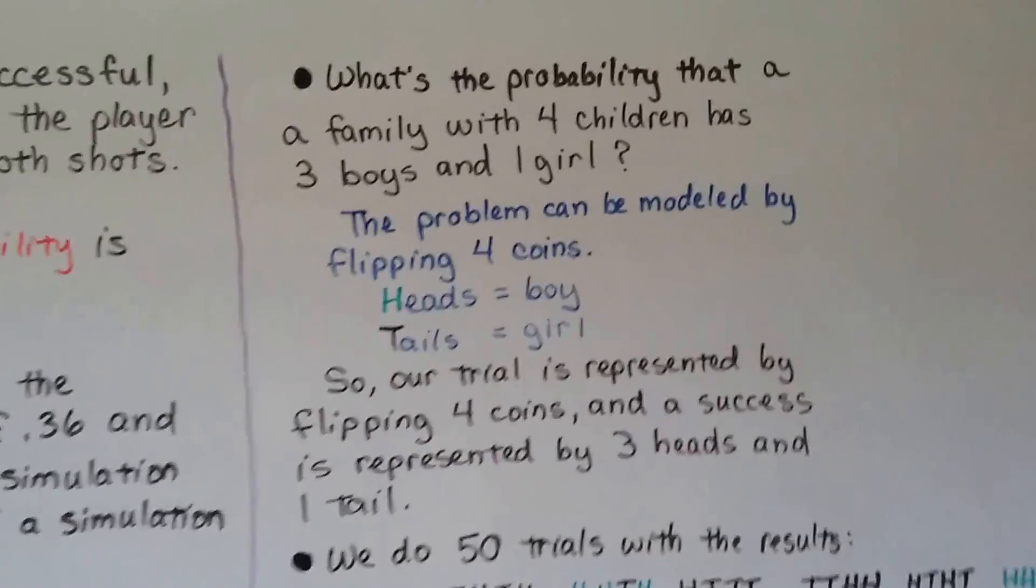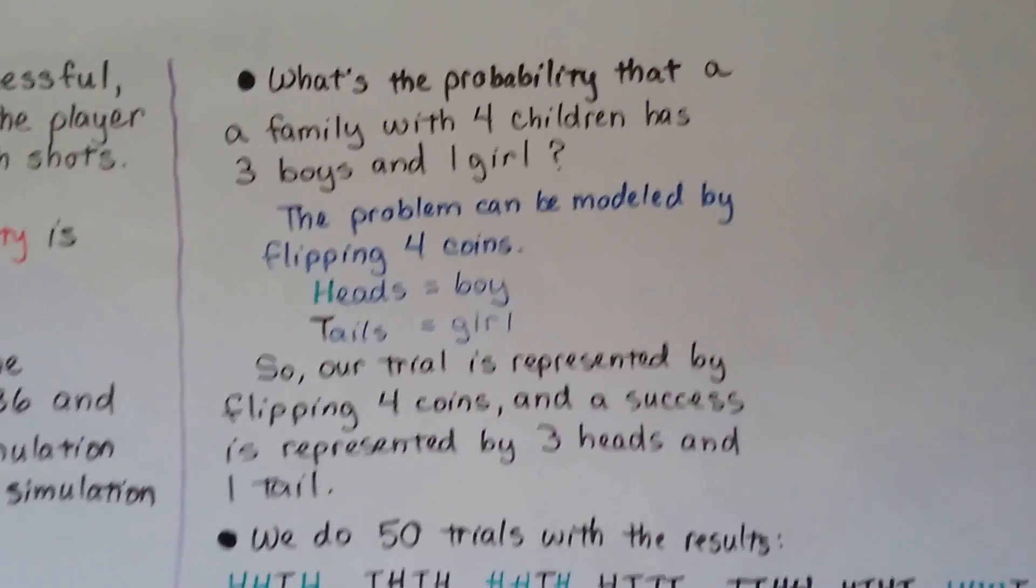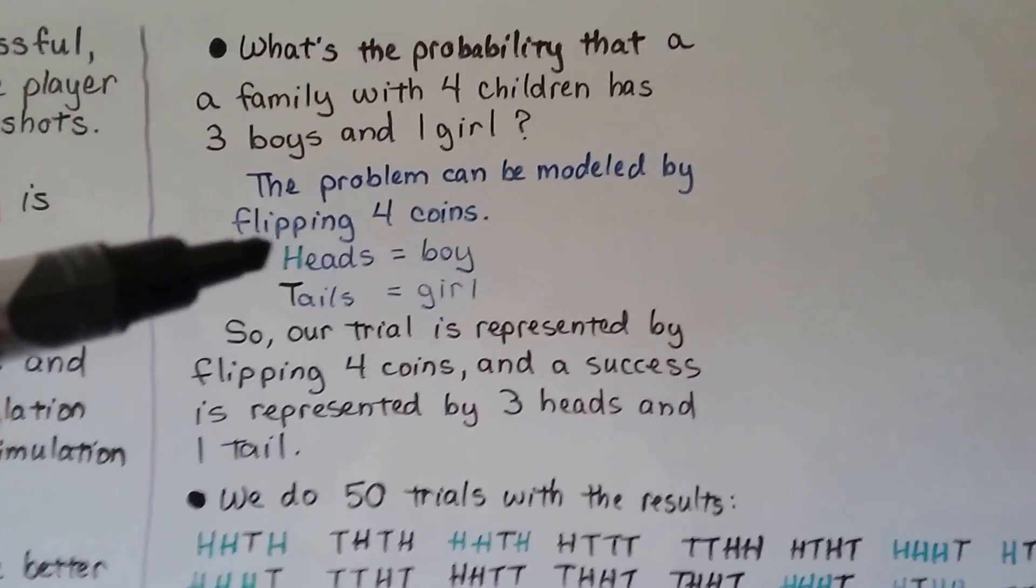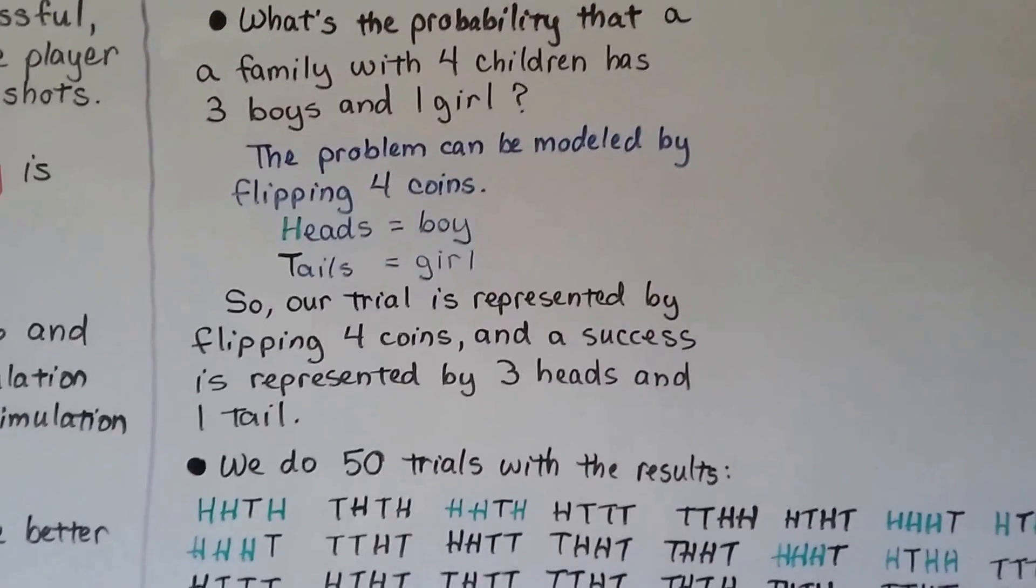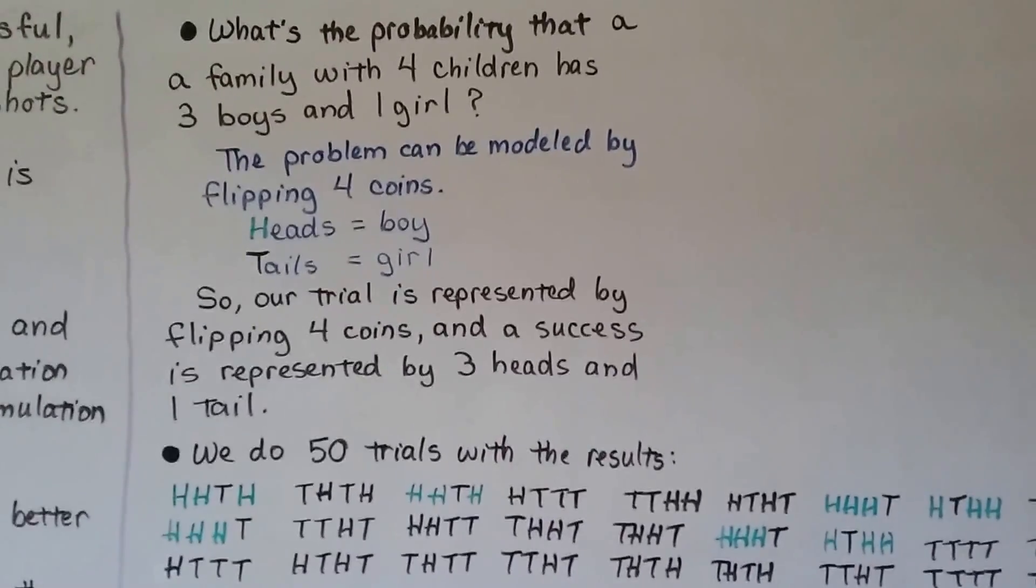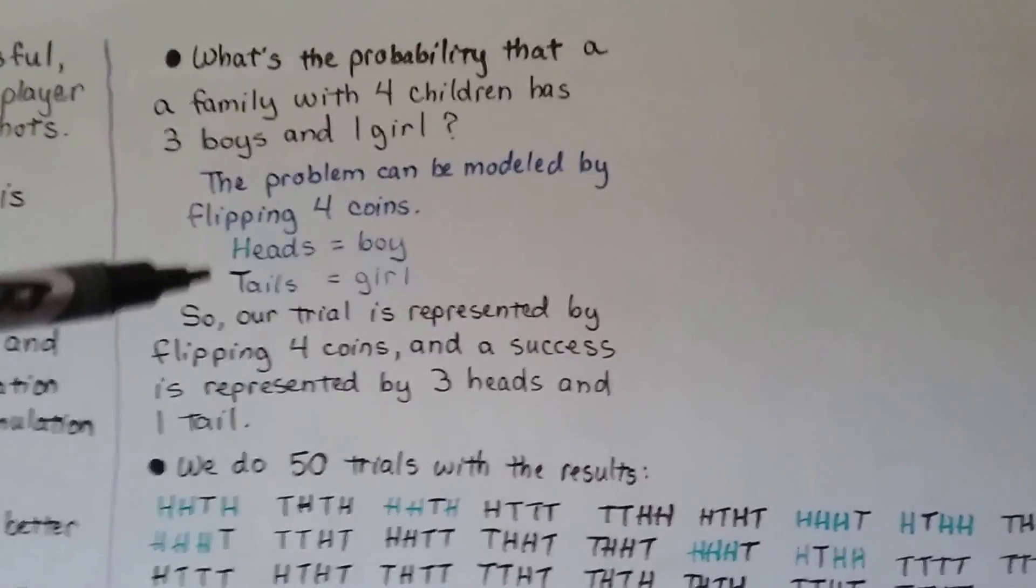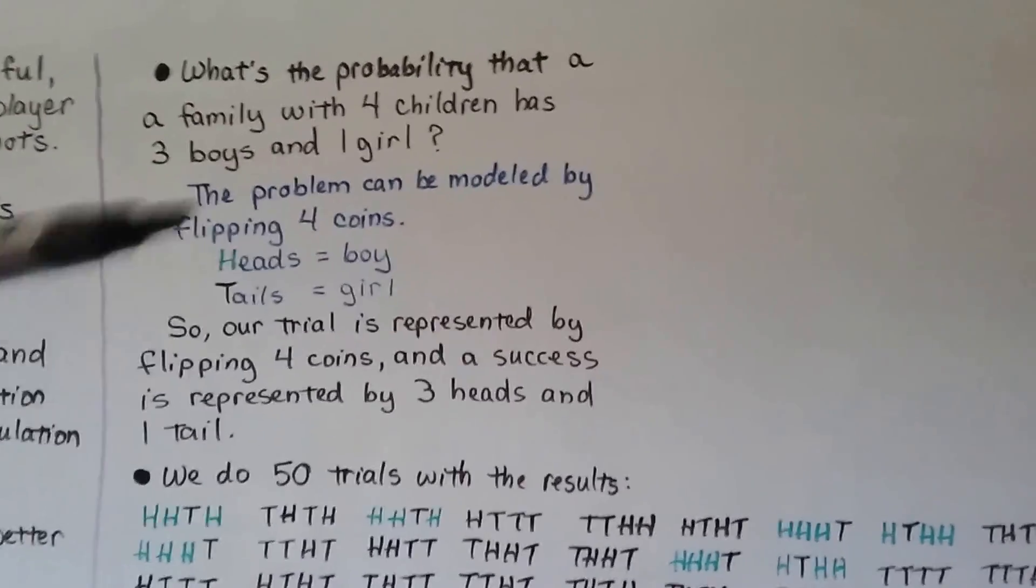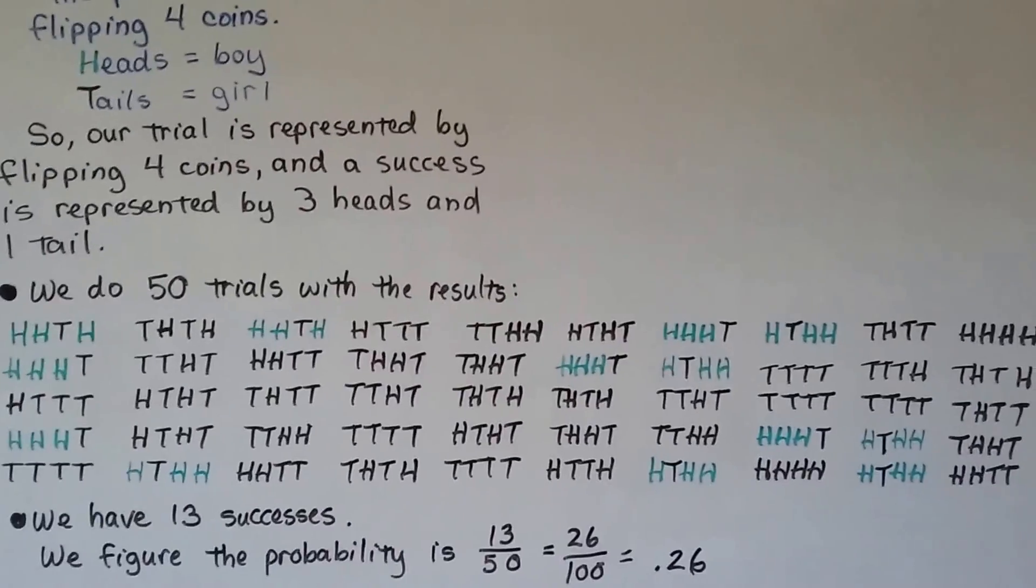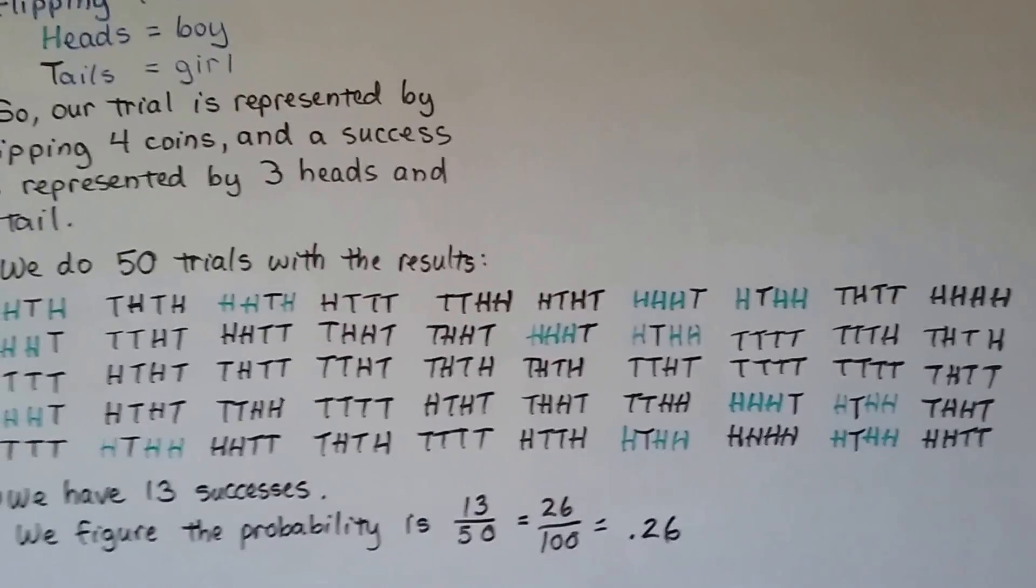What's the probability that a family with four children has three boys and one girl? So this problem can be modeled by flipping four coins. We can say heads is boy and tails is girl. So our trial is represented by flipping four coins. And a success is represented by three heads and one tail. So a coin is perfect for this one because our choice is boy or girl. So it's heads or tails. If we do 50 trials, we could get the results. And this is just an example of the results we can get with 50 trials.